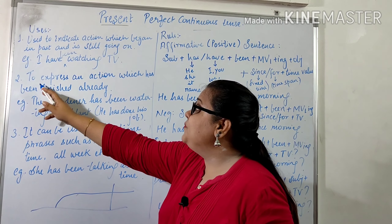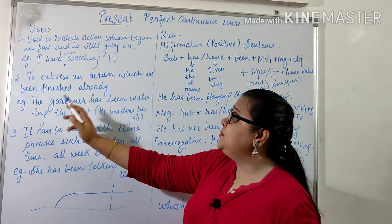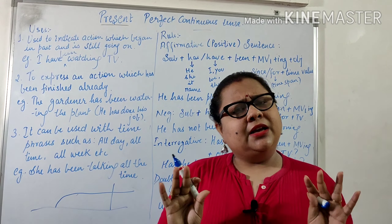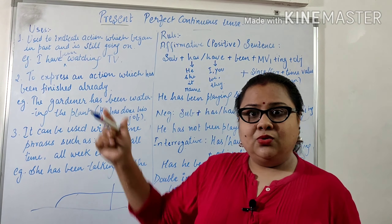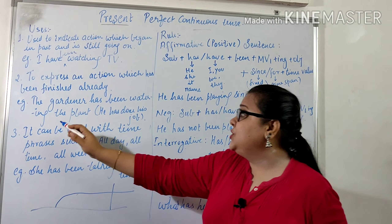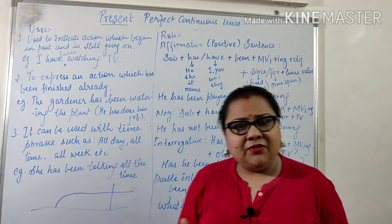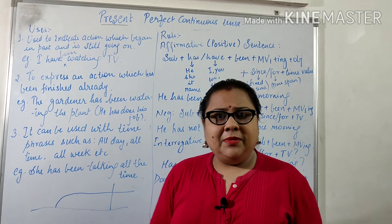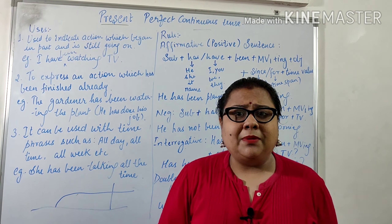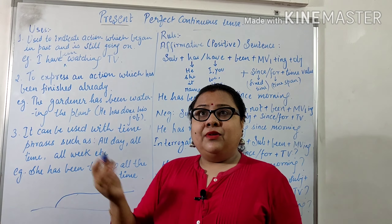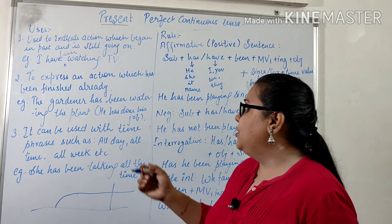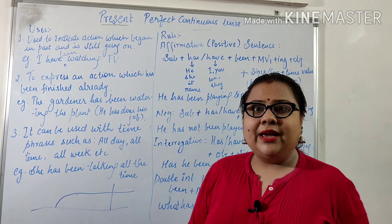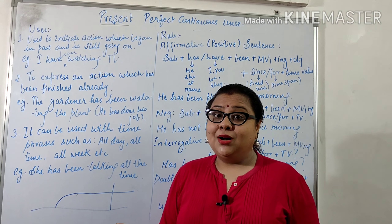The second application: present perfect continuous can also be used to express an action which has already been finished. For example, 'The gardener has been watering the plants' — right now he's done with his job. Similarly, 'She has been cooking' — right now she is free and done with her work.